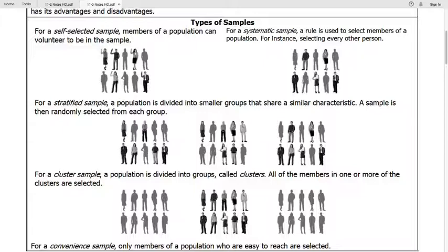The last one doesn't have an image on this one. A convenience sample is kind of exactly how it sounds. We only take members of a population who are easy to reach.